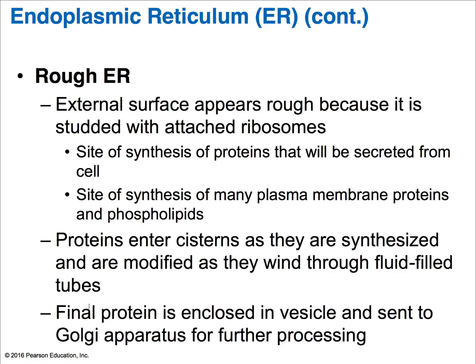Now let's look at the Golgi apparatus. In appearance, it's a stacked and flattened membranous cistern sac. It has two ends, or faces: a cis face, which receives products from the rough ER, and a trans face, the outer face, that ships off the completed product out of the Golgi apparatus. The Golgi apparatus modifies, concentrates, and packages proteins and lipids it receives from the rough ER.